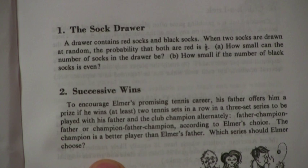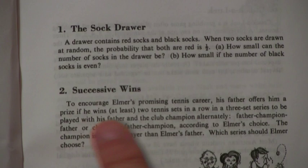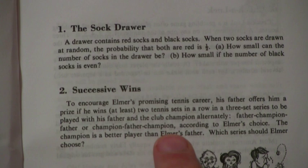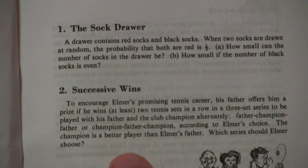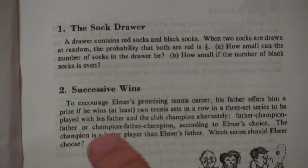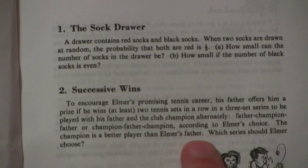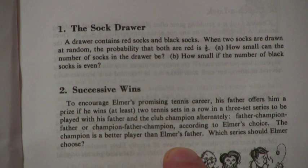So it says, this problem is called successive wins. To encourage Elmer's promising tennis career, his father offers him a prize if he wins at least two tennis sets in a row in a three-set series to be played with his father and the club champion alternately. So either it goes father-champion-father or champion-father-champion. According to Elmer's choice, the champion is a better player than Elmer's father. Which series should Elmer choose?